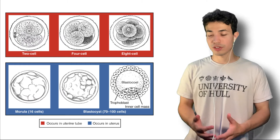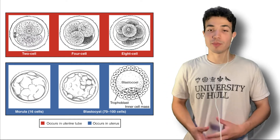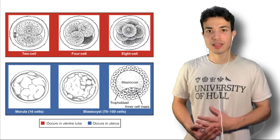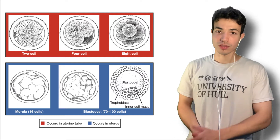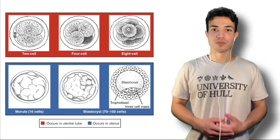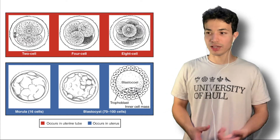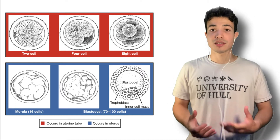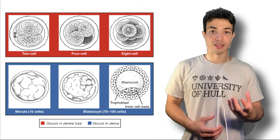The stages shown in red are the ones that happen while we're still in the fallopian tubes, and then once we get into the uterus those are the stages shown in blue. As we can see, if we look at the red stages, the embryo is encapsulated by this ring-like structure — and that is the zona pellucida.